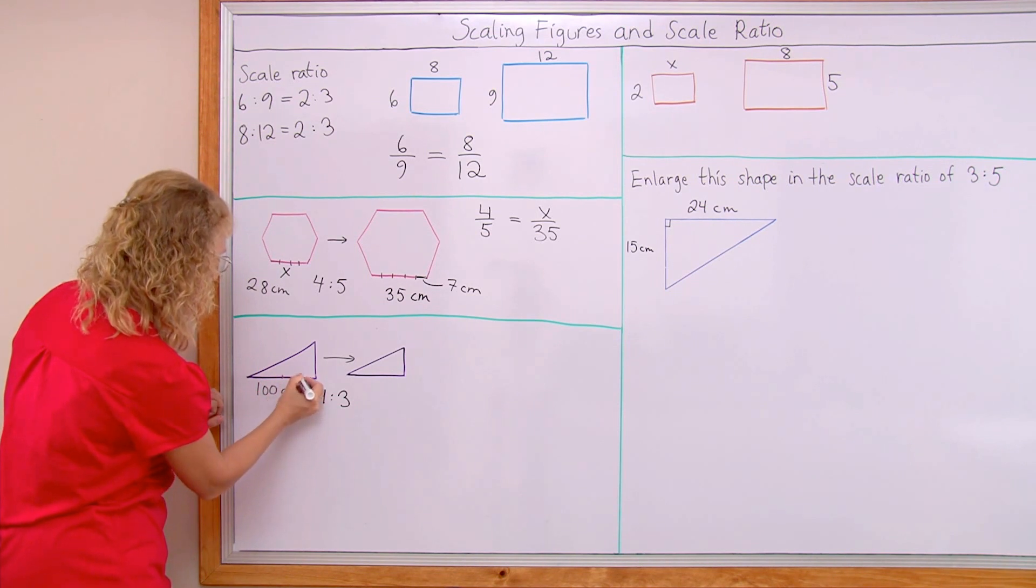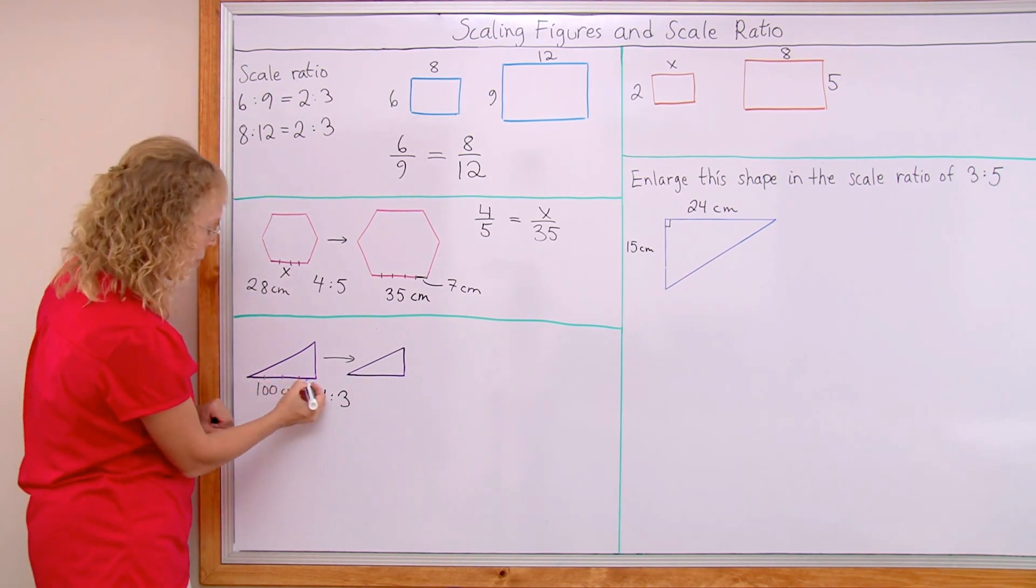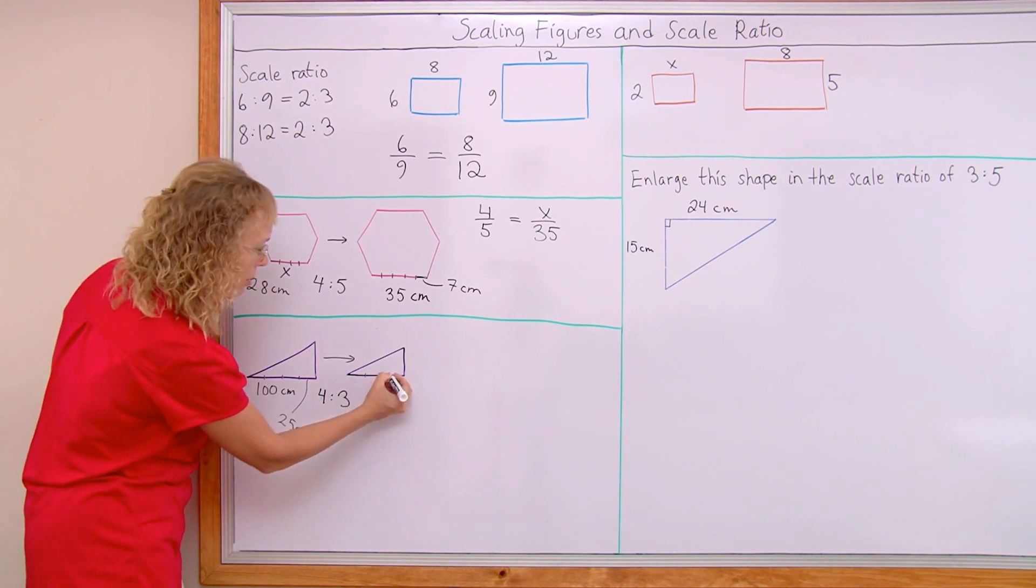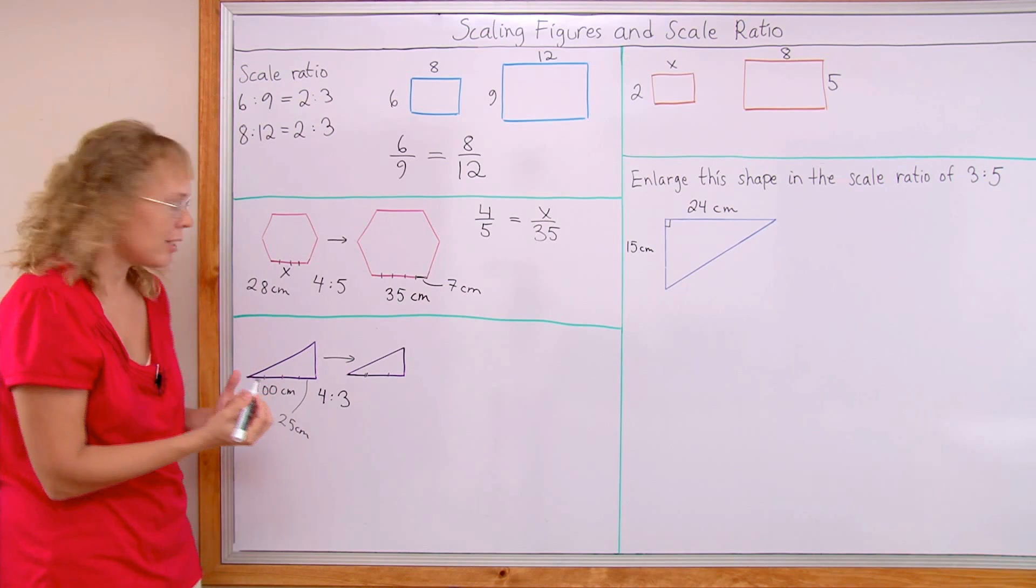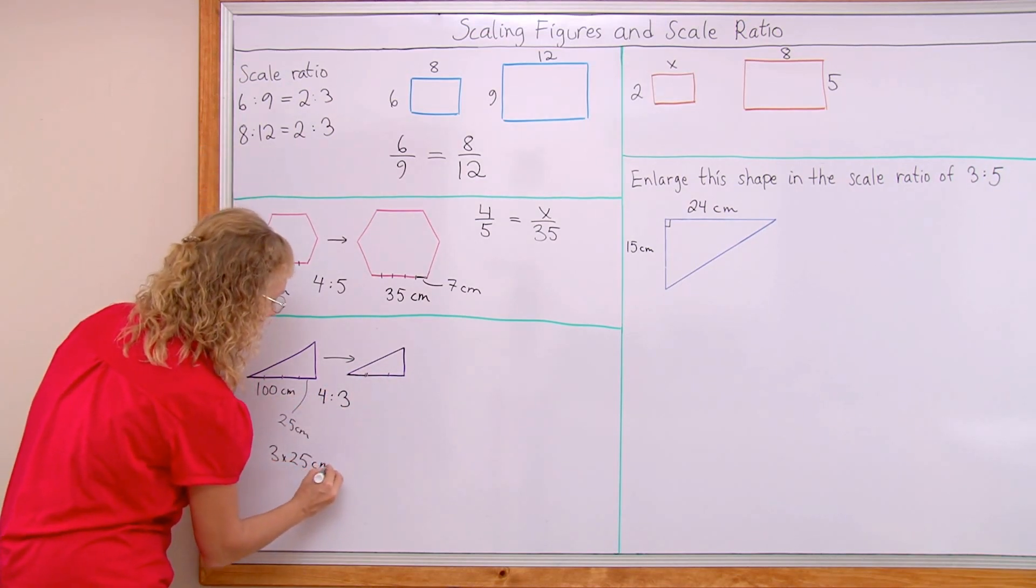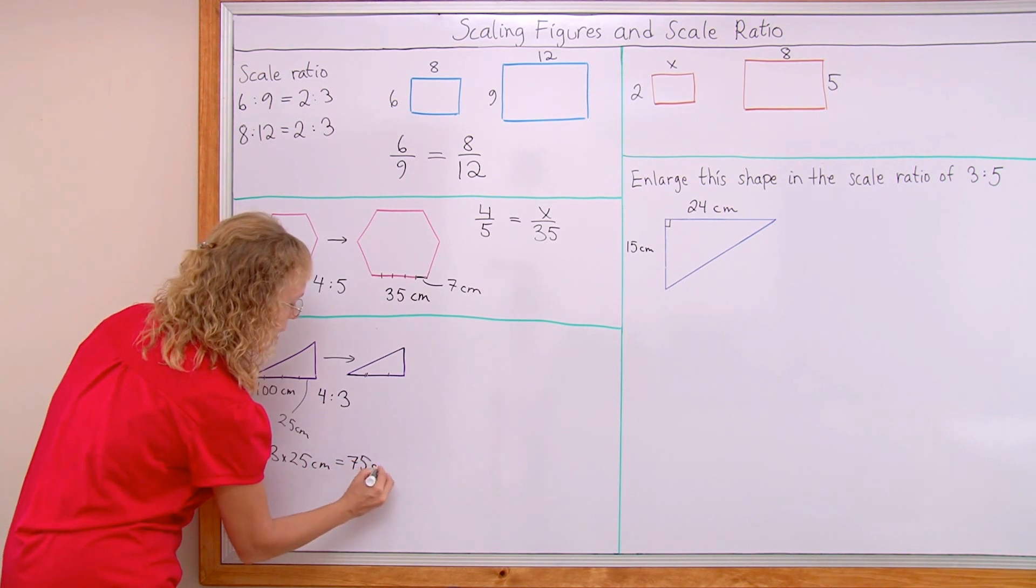So if this is divided into 4 parts, then each part must be 25 cm. And here would be 3 parts. And each would be 25 cm. So I get 3 times 25 cm or 75 cm here.